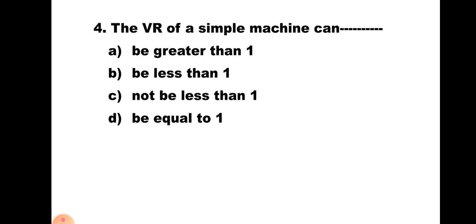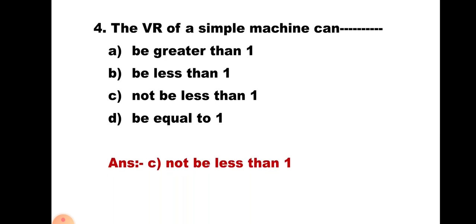Question number 4: The VR of a simple machine can — A) be greater than 1, B) be less than 1, C) not be less than 1, D) be equal to 1. Just like the previous question on MA, this is also the same, hence the most correct option is C) cannot be less than 1.